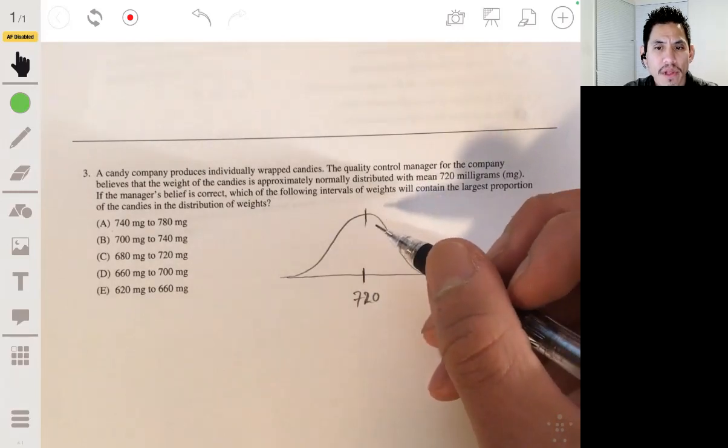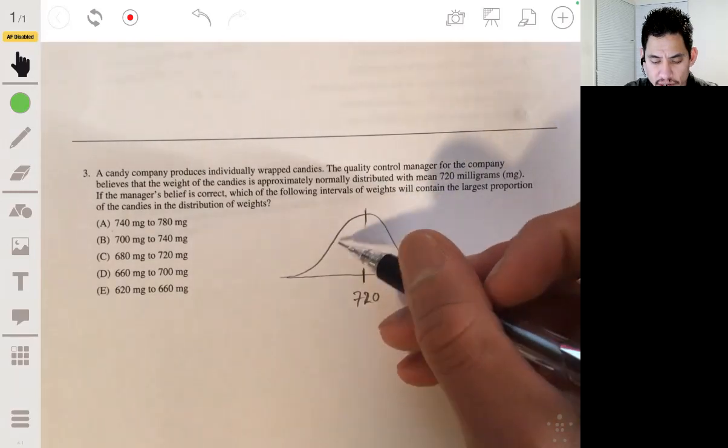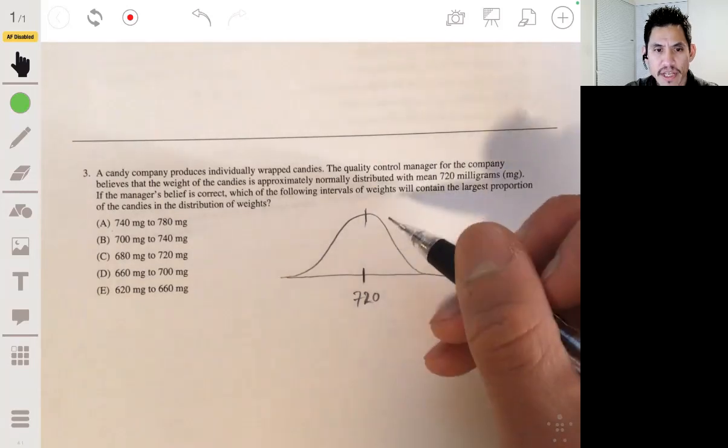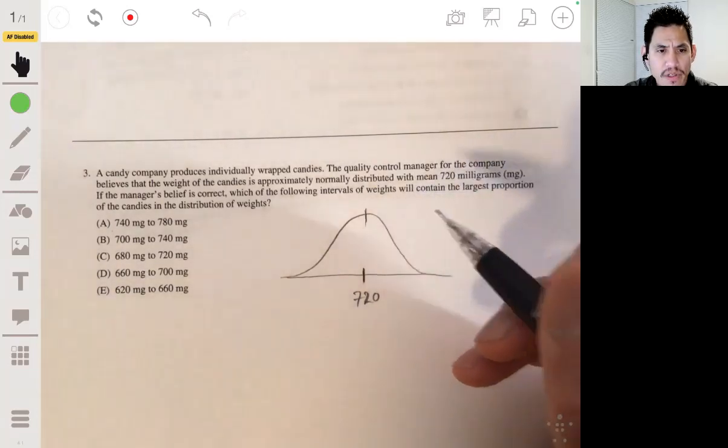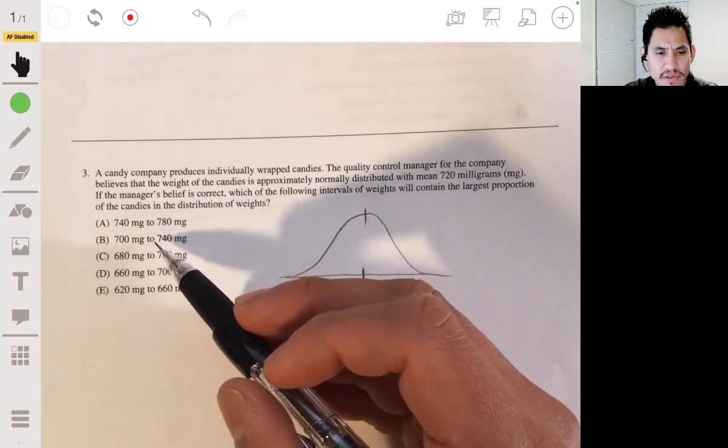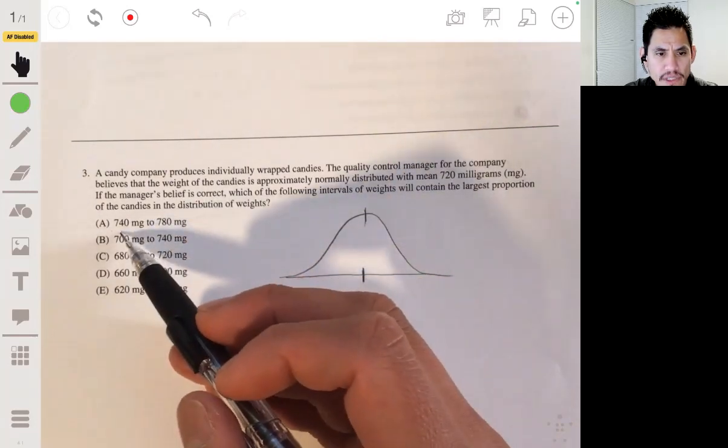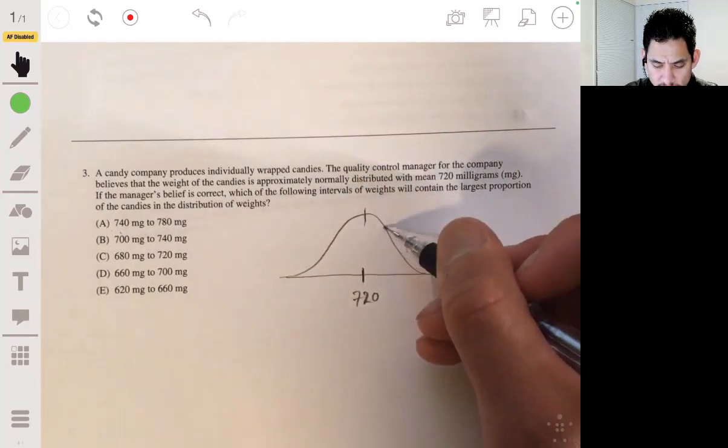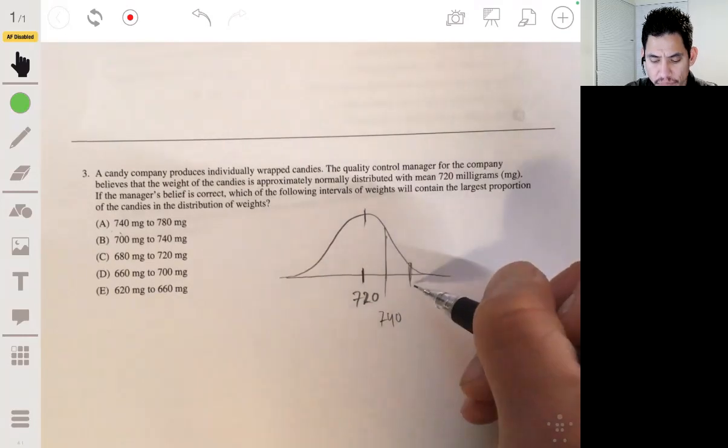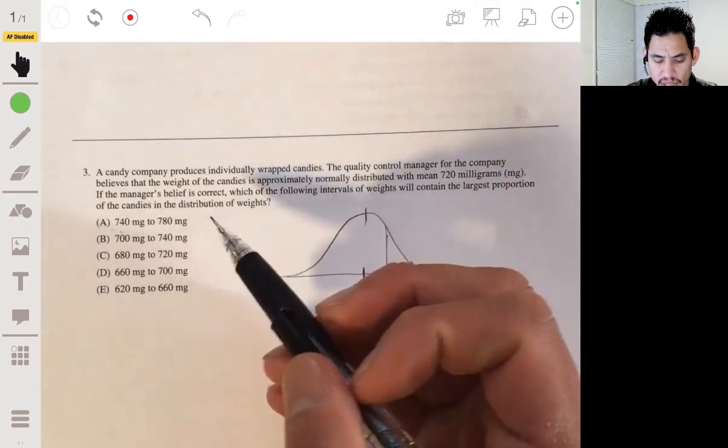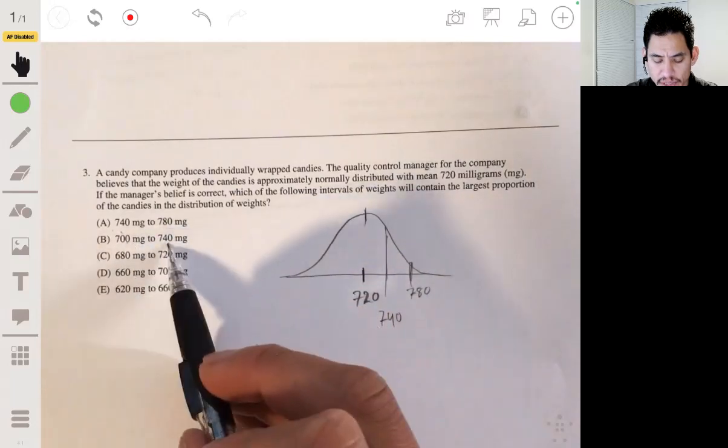And so then the intervals that are centered around 720 will contain the largest proportion. So let's see which of these are centered around 720. So this is 740 to 780. The 740 to 780 would be on this side. So not that one, but let's look at the other one. 700 to 740.